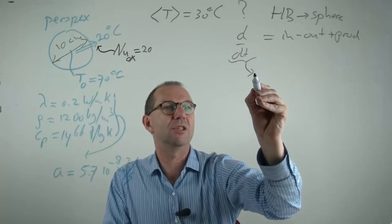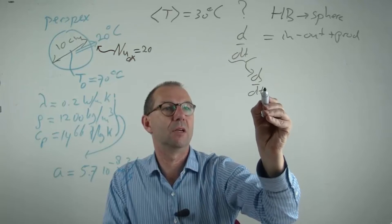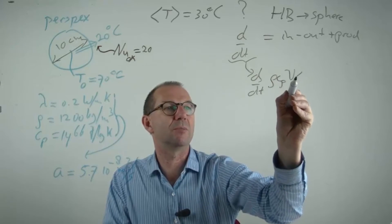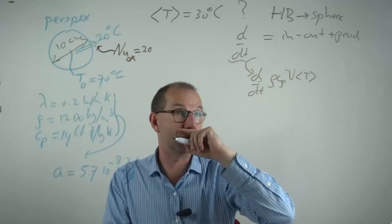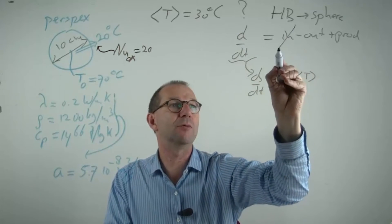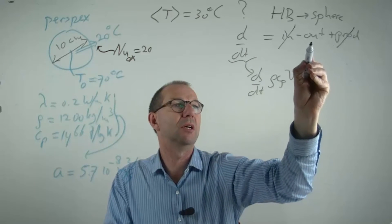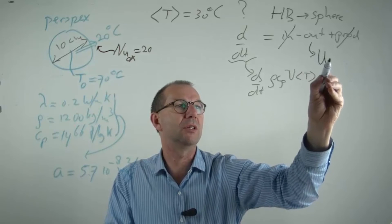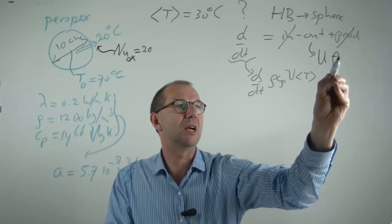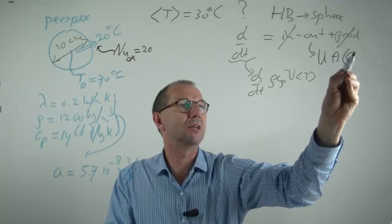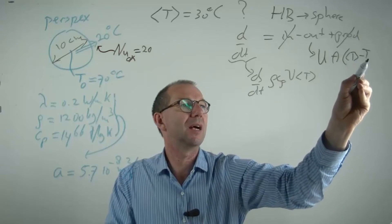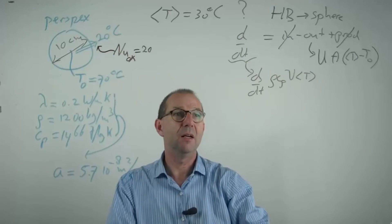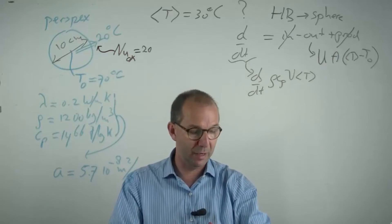Actually, this is the d/dt of ρCpV times the average temperature, all taken of the sphere. There is no inflow, there is no production, the outflow can be written as a total heat transfer coefficient, U times A times the driving force, for which we take T average minus T of the surrounding. And we are faced with having to solve this differential equation.